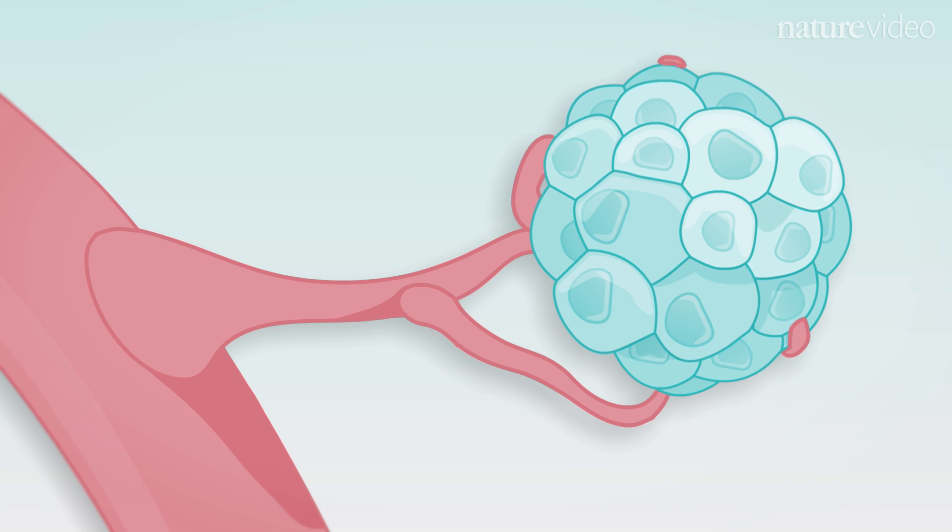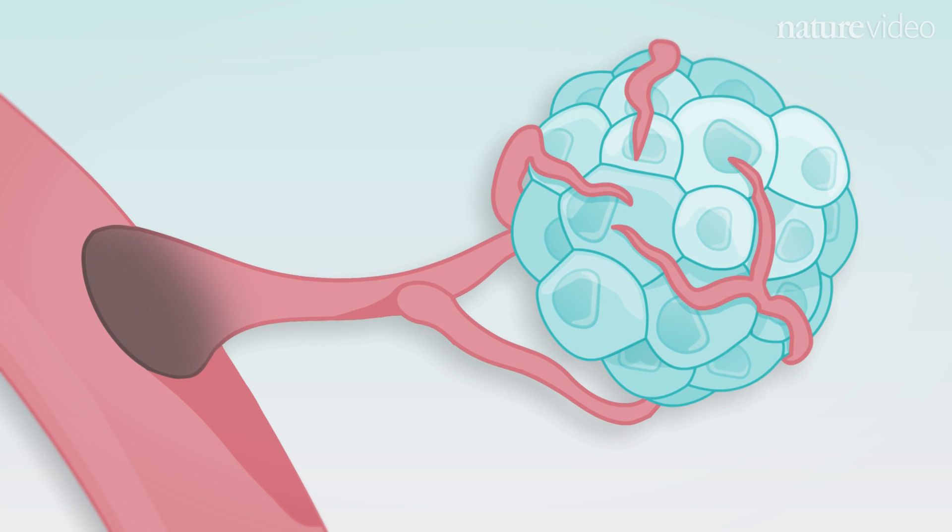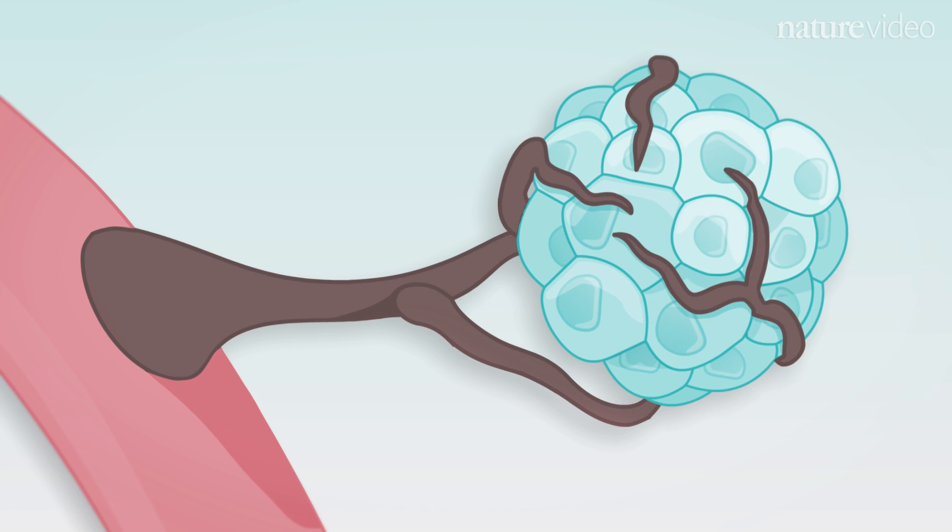A second approach is to target the tumor's blood supply, rather than the tumor itself. Drugs can be used to prevent the growth of blood vessels in and around the tumor, starving it and stunting its growth.